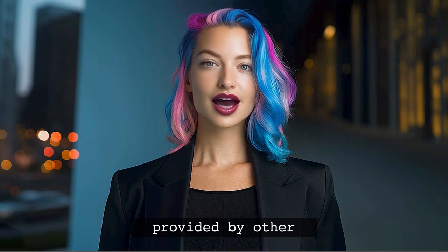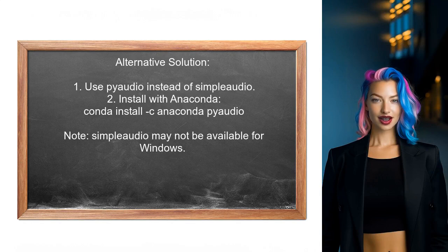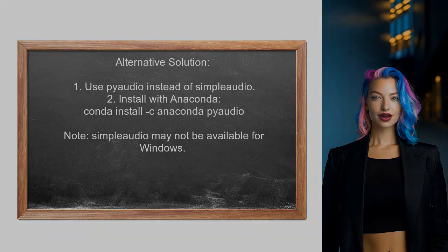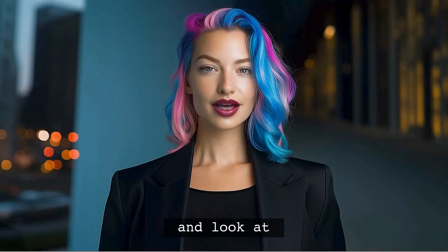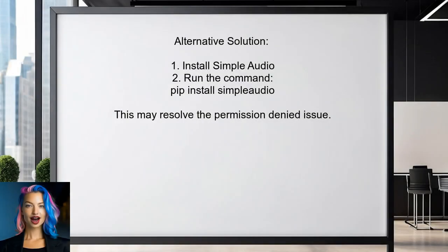Now, let's look at the answers provided by other users. If you're experiencing the permission-denied error on Windows and having trouble with simple audio, consider using PyAudio instead. You can install PyAudio via Anaconda with a simple command. An alternative solution comes from another user who suggests installing a package called simple audio. They recommend running the command pip install simple audio to resolve the permission-denied issue, and this approach worked for them.